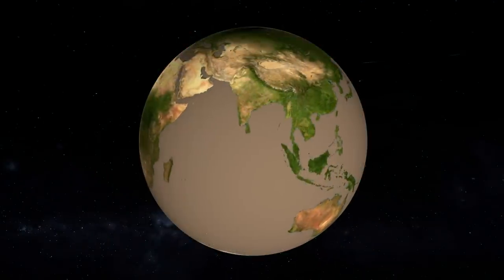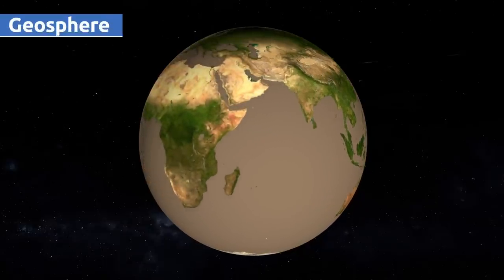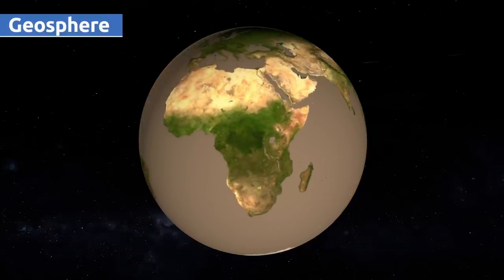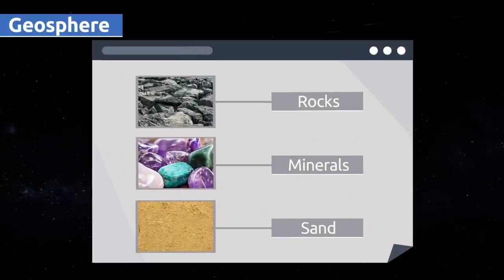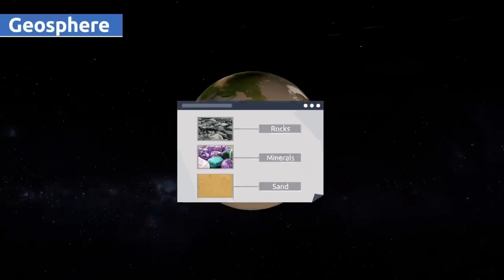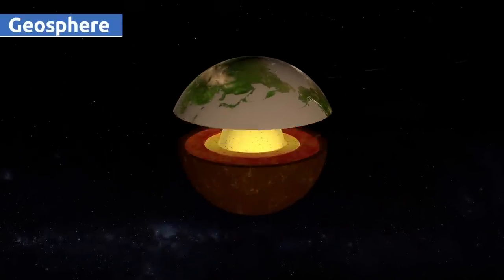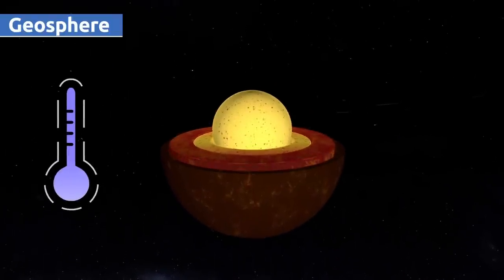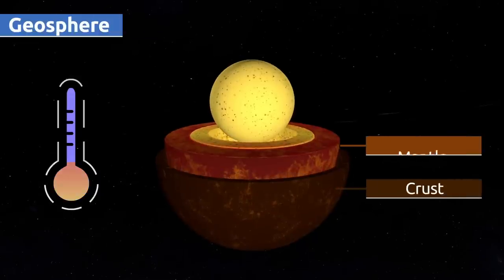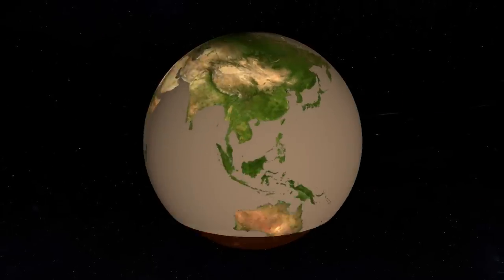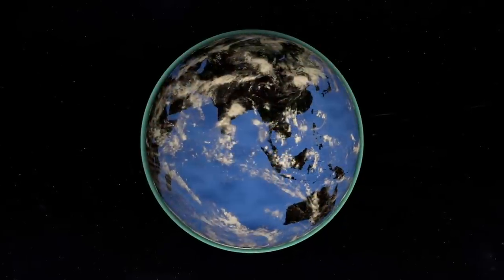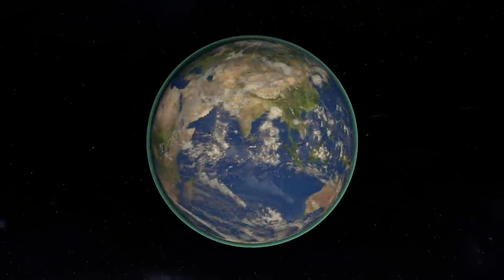The inner layer of the earth is the geosphere, which extends from the surface to the center of the earth. This solid, habitable layer is made up of rocks, minerals, sand, and other materials. The geosphere is divided into three different layers: the crust, the mantle, and the core. Temperature rises significantly as we move deeper. That is all about the layers of the earth — don't miss the next video to find out more.